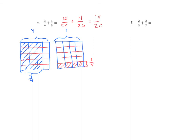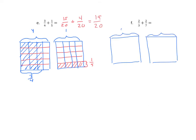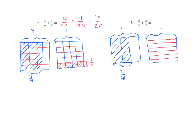On to the last example. Again, we have two non-unit fractions. Two rectangles, each bracketed as one whole. We're going to use two vertical lines, partitioning the whole into three equal parts. Two parts are shaded because two is the numerator — bracket it as two-thirds. Now we're going to use six horizontal lines to partition the second rectangle into seven equal parts. Two is our numerator, so we shade two out of the seven parts and label it two-sevenths.